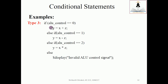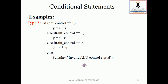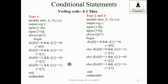For Type 3, the nested if-else example: if alu_control equals 0, addition (x plus z) happens. Else if alu_control is 1, subtraction happens. Else if alu_control is 2, multiplication happens. If none of these match, the else statement executes displaying 'invalid ALU control signal' to the console.